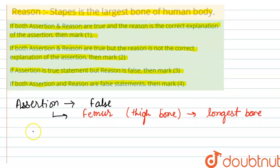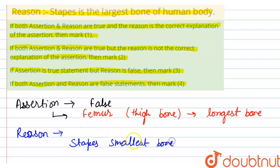Now comes to reason. The reason is saying that stapes is the largest bone of the human body. If we talk about stapes, it is the smallest bone and it is found in the middle ear, so this reason is also false.